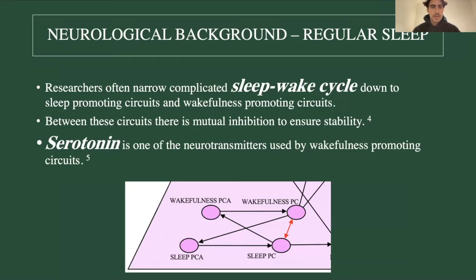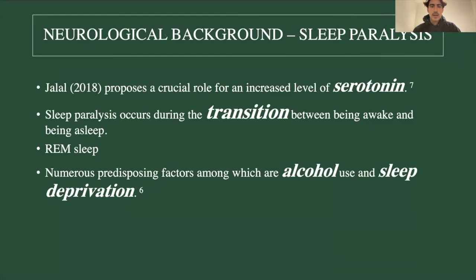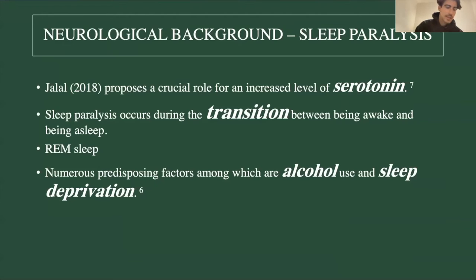The sleep-wake cycle is very complicated, but researchers often narrow it down to sleep-promoting circuits and wakefulness-promoting circuits, between which there is mutual inhibition to ensure stability. Serotonin is one of the tools of the wakefulness-promoting system. It has been discussed that serotonin might be the neurotransmitter disrupting the transition between being awake and being asleep — sleep paralysis most often occurs at this transition. Sleep paralysis has characteristics of being awake in that you are conscious, but also characteristics of being asleep, specifically REM sleep, during which motor neurons are shut down to prevent you from acting out your dreams.